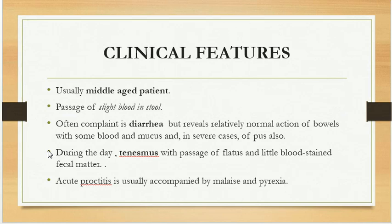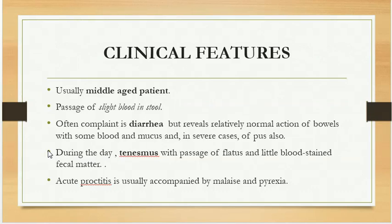Regarding clinical features, the patient is usually middle-aged and complains of passage of slight blood in the stool. He also complains of defecatory frequency. Often the complaint is diarrhea, but it reveals relatively normal bowel action with some blood, slight blood, and mucus. In severe forms, there may be pus also in the stools.